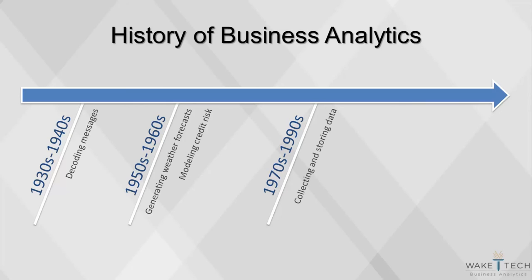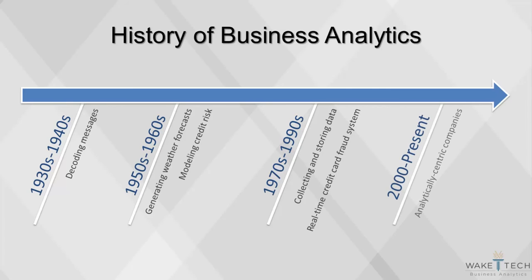The types of analytical projects transitioned from being historical in nature to real-time. In 1992, the first real-time credit card fraud system was introduced. Then the first analytically-centric companies emerged. Companies such as Google use data to build their core product, while other companies such as Amazon use analytical techniques to earn market share from competitors. The rapid ascension of these tech companies has led to an arms race, where all businesses have become committed to analytics.